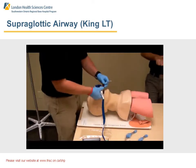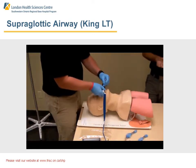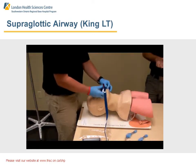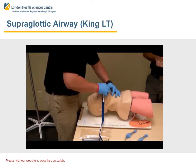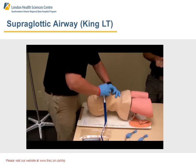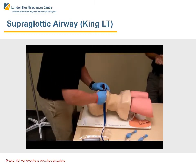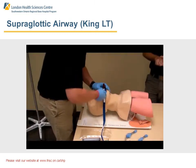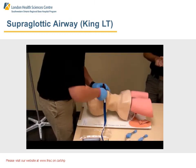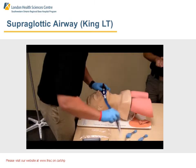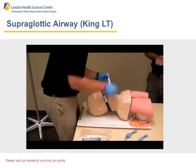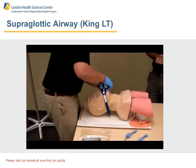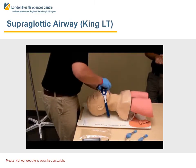From this point, take the tube holder — whichever type your service is utilizing — place the tube holder into the mouth and secure the King. Tape can also be used in place of a tube holder if one is not available.